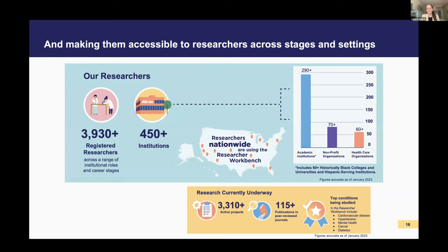What's impressive about this collaborative effort is the strong emphasis on making data accessible to researchers across different stages and settings. As of June of this year, there are over 5,700 registered researchers from over 530 institutions. That represents students at all levels — even at the high school level — academic researchers, clinicians, nurses, physicians, nurse practitioners, and trainees at every stage. The top conditions studied so far include major high-incidence conditions like cardiovascular disease, hypertension, mental health, cancer, and diabetes.